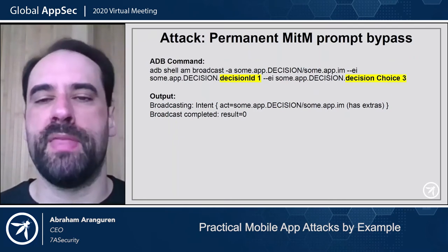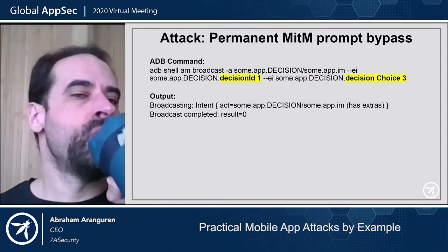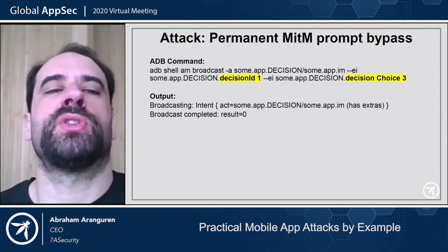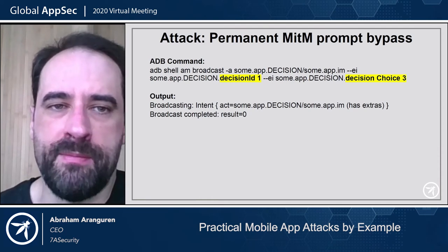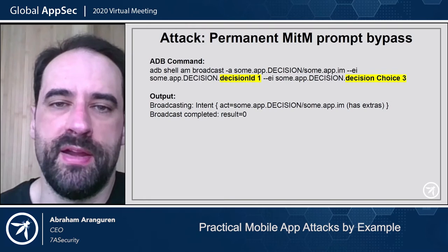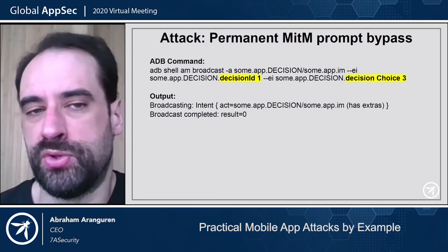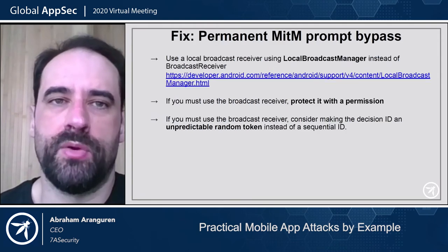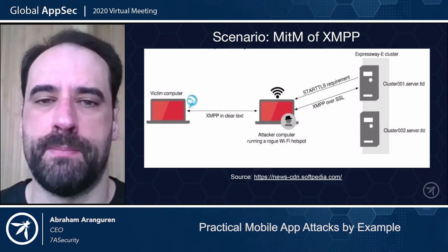This was a permanent man-in-the-middle bypass using the broadcast receiver. We can send the receiver an intent carrying the decision and choice of trusting the SSL certificates forever. If we do that at the right time when the user is being prompted, we can bypass that dialog and get our certificate accepted permanently. This is how they fixed this, and now let's look at another man-in-the-middle for XMPP.